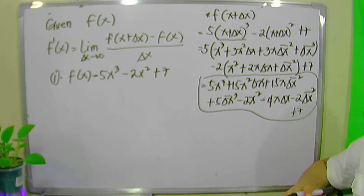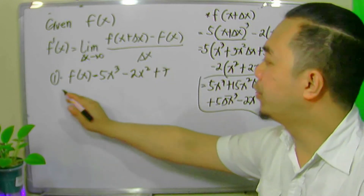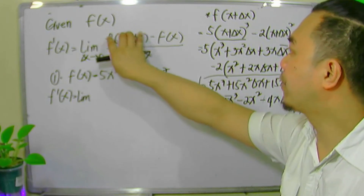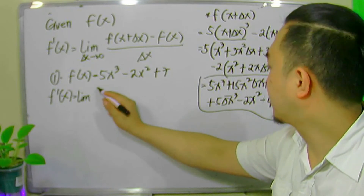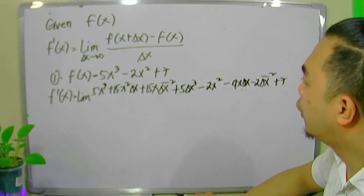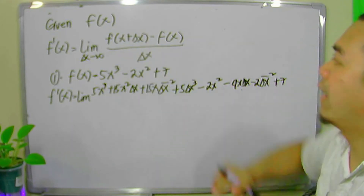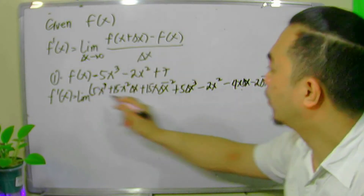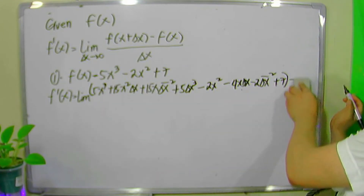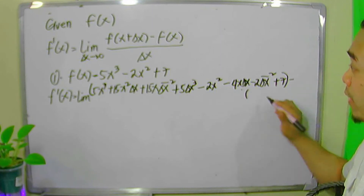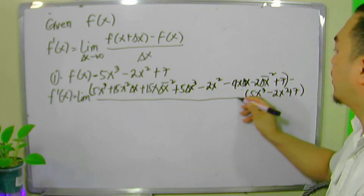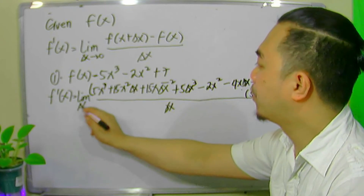We are now ready to compute for the actual derivative. We follow the formula: f prime of x equals the limit as delta x approaches zero of f of x plus delta x minus f of x, all over delta x. We write the value of f of x plus delta x, then subtract f of x, which is 5x cubed minus 2x squared plus 7, all divided by delta x.